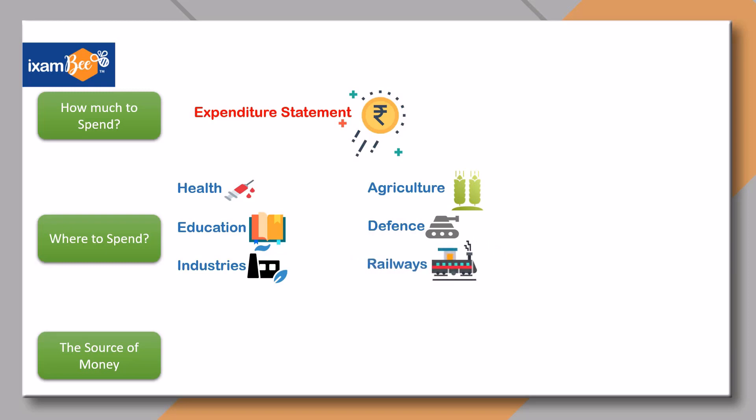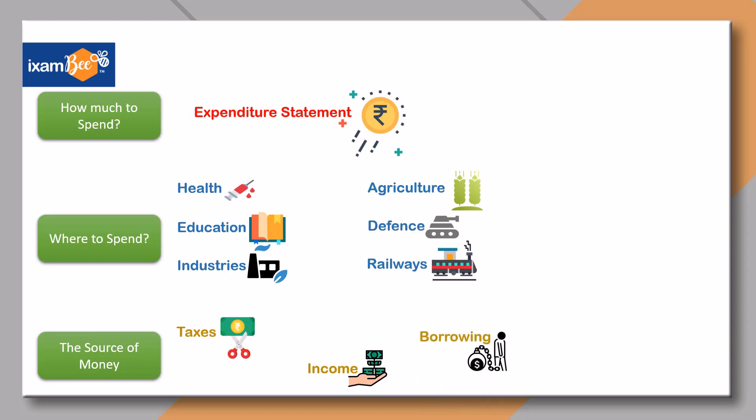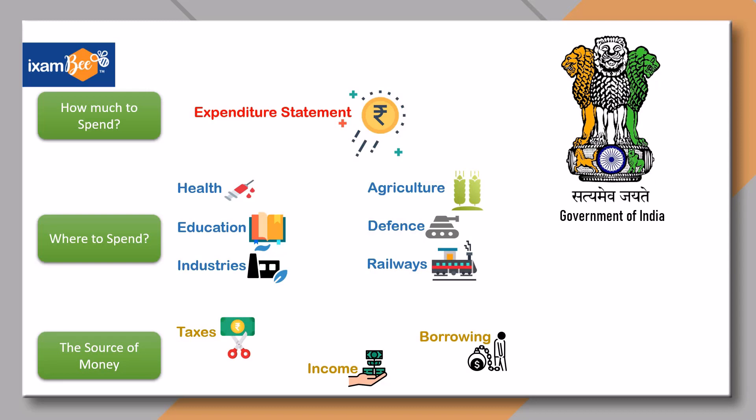Then there is the source of money. In its fiscal policy, the government decides how much must come from different sources as revenue. Some examples are taxes, income generated by PSUs, or money received from borrowing. The Government of India is responsible for making the fiscal policy, and its major policy announcement happens during the introduction of the Union Budget.